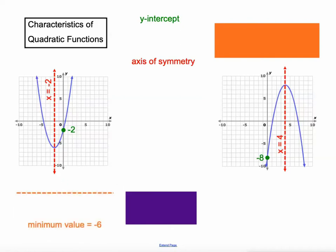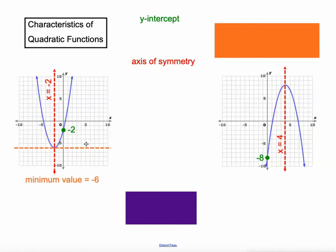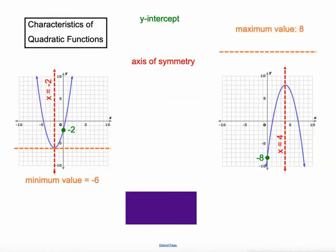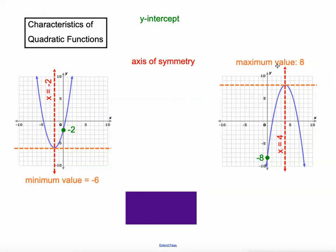Next, I want to talk about the minimum value. When it stops getting smaller and starts getting bigger, what's the minimum value that it achieves? On this one, the minimum value is negative 6. This one doesn't have a minimum value. Over on the right, it has a maximum value — where it stops getting bigger and then starts getting smaller. It reaches positive 8 but never gets any bigger than that. That's its maximum value.